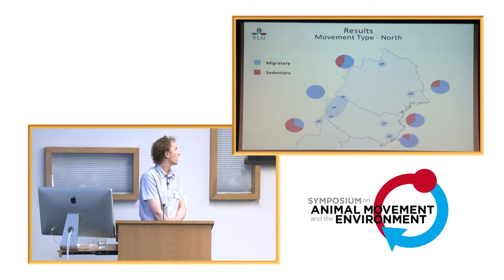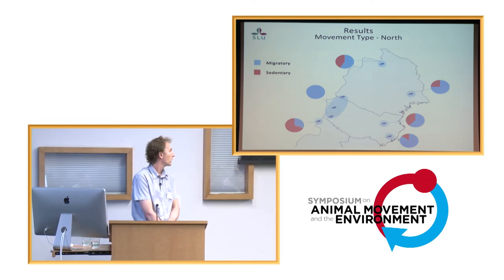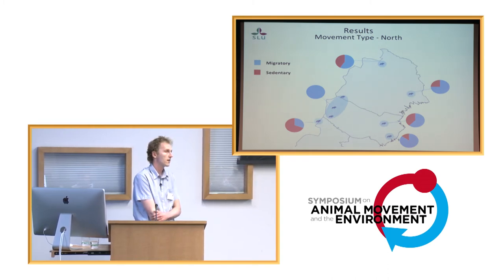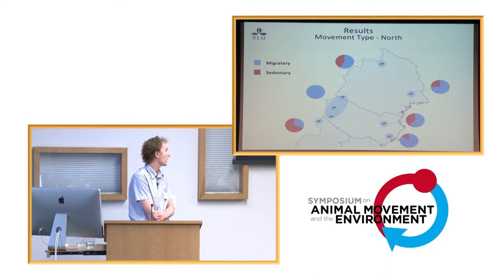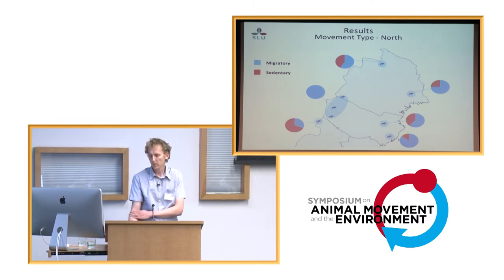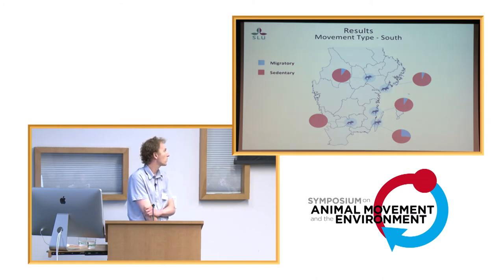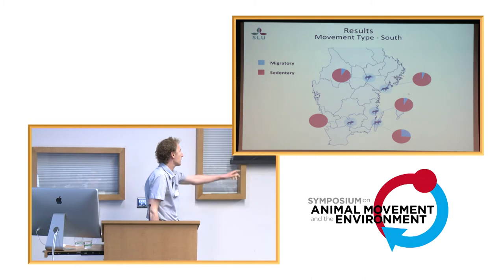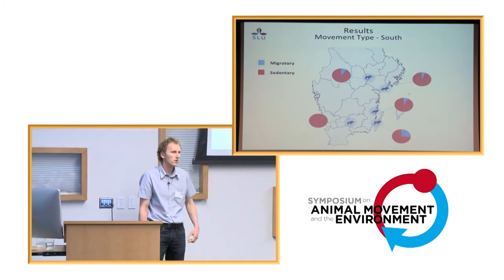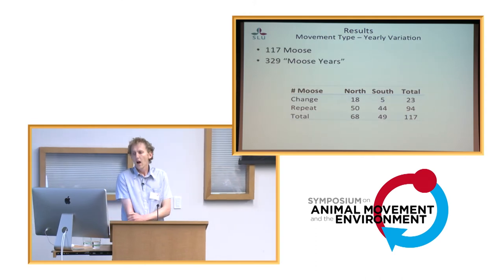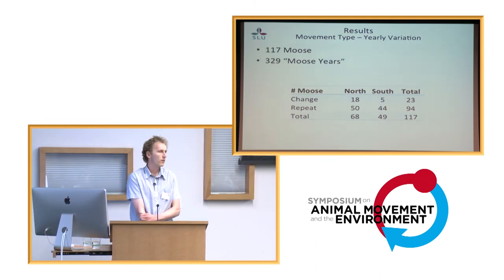Looking at the variation within the north and the south: in the north there was certainly some variation in the proportion of movement strategies, with some areas having 100% migratory but other areas having 50% or less. In the south, there was generally less variation and more sedentary movements. But again, this island I pointed out earlier does have a higher proportion of migratory movements — around 25%.